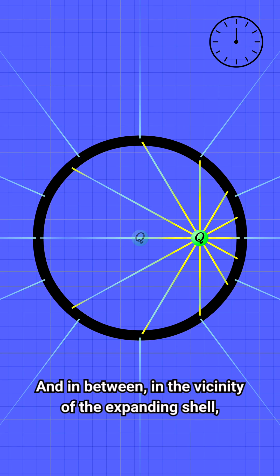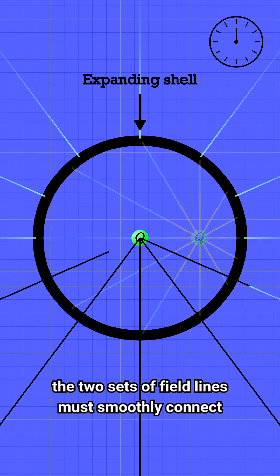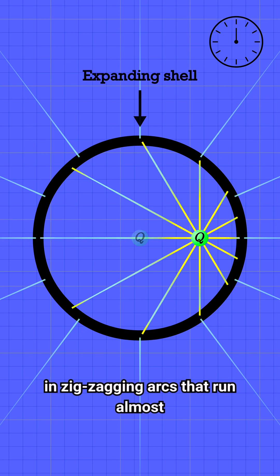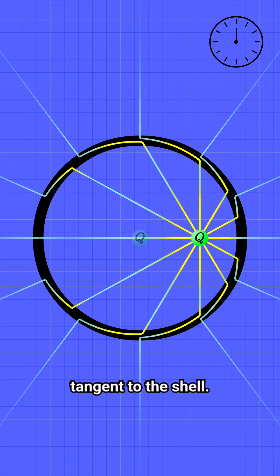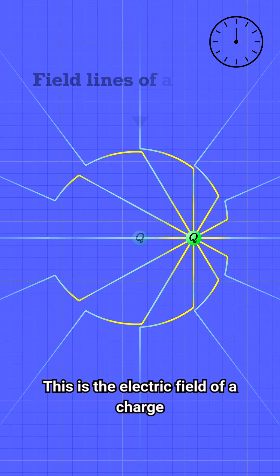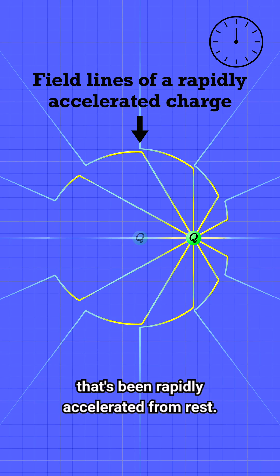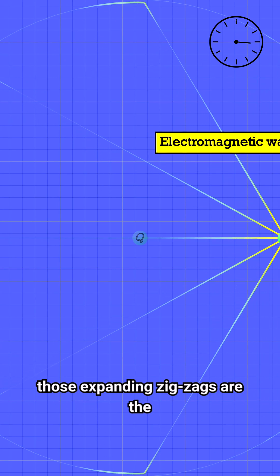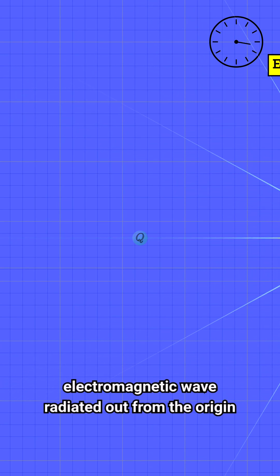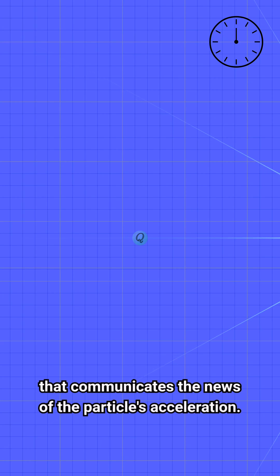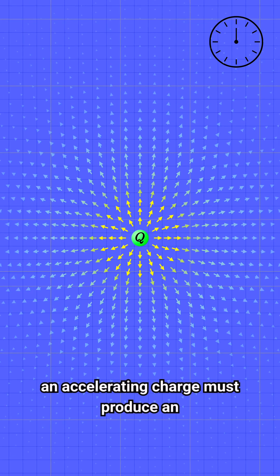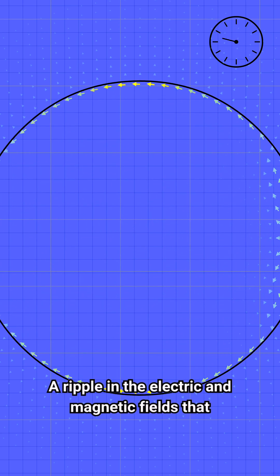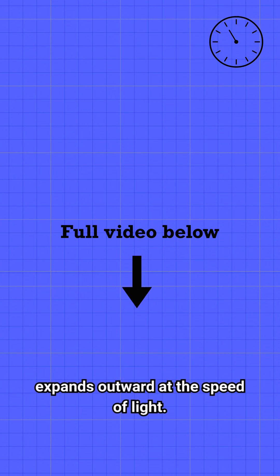And in between, in the vicinity of the expanding shell, the two sets of field lines must smoothly connect to one another. And there's really only one way that they can: in zigzagging arcs that run almost tangent to the shell. This is the electric field of a charge that's been rapidly accelerated from rest. Combined with the magnetic component, those expanding zigzags are the electromagnetic wave radiated out from the origin that communicates the news of the particle's acceleration. In other words, an accelerating charge must produce an electromagnetic wave — a ripple in the electric and magnetic fields that expands outward at the speed of light.